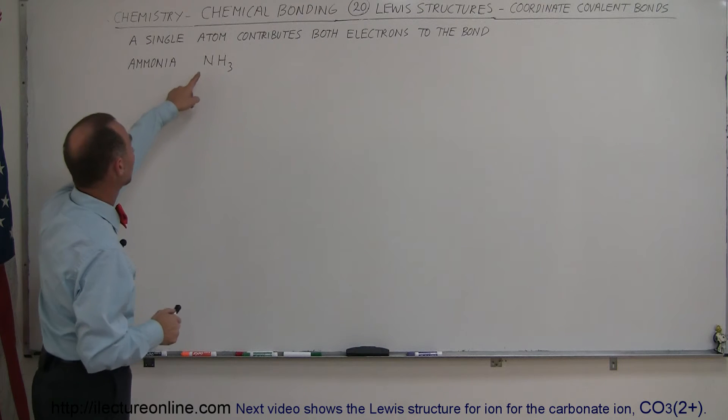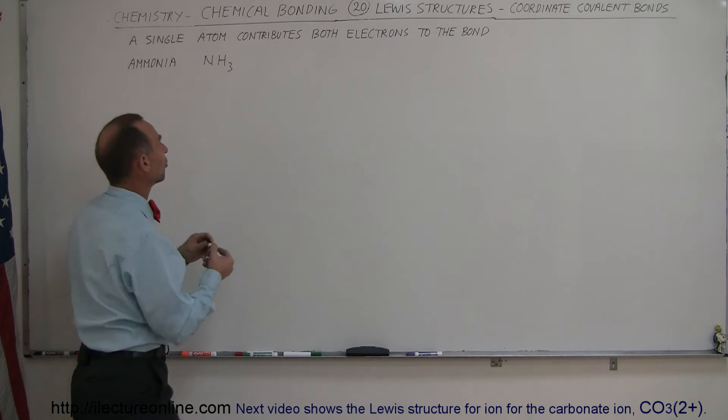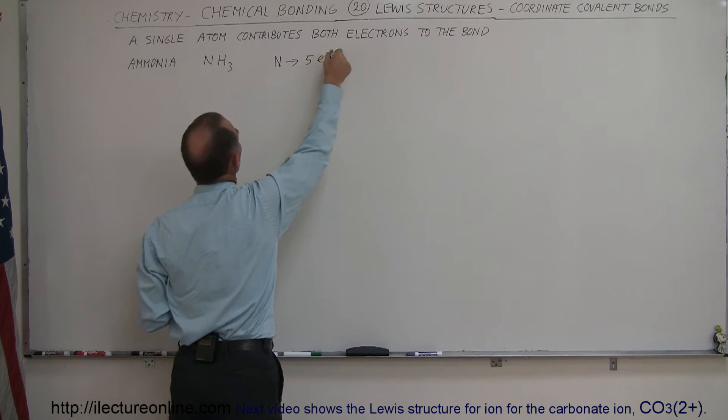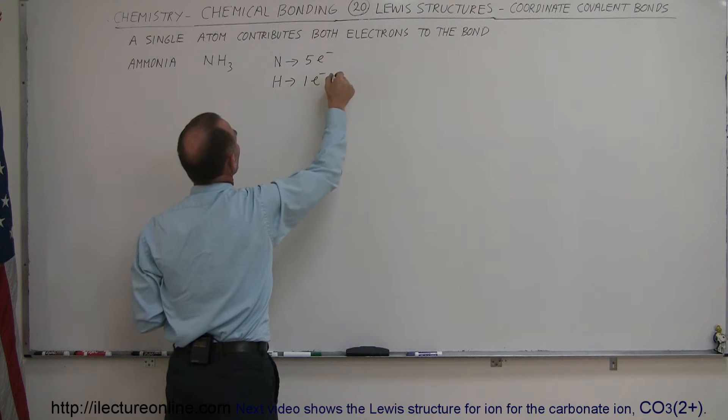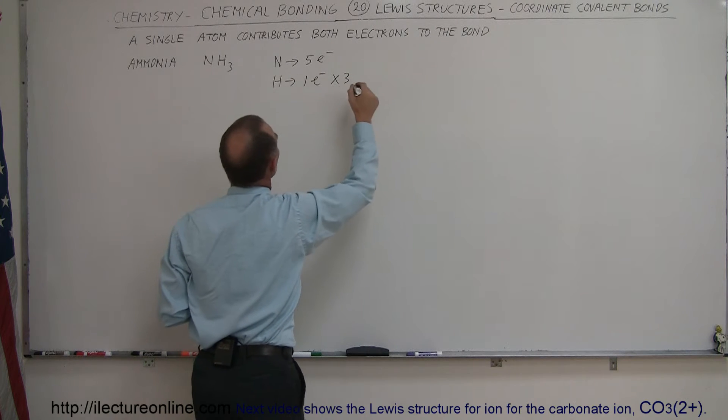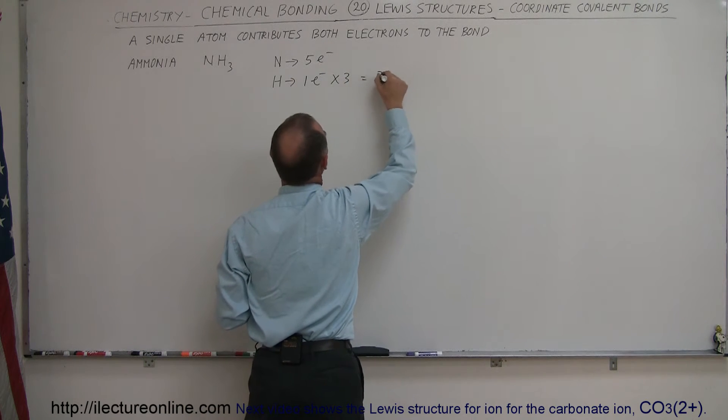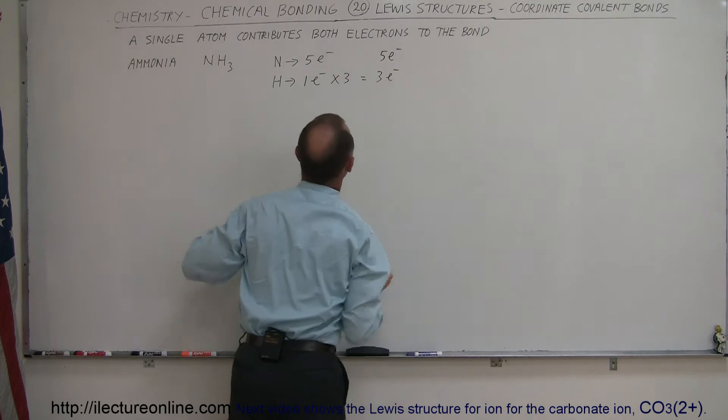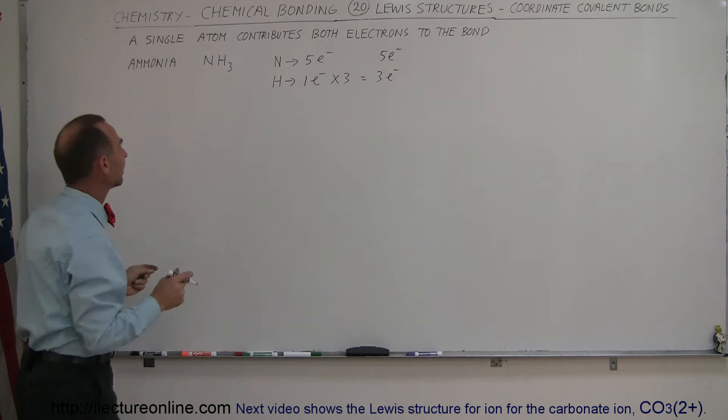So ammonia has nitrogen and three hydrogens. Now remember that nitrogen has five valence electrons, and hydrogen has one valence electron. There's three of those in that molecule, so we have a total of three valence electrons from the hydrogens and five valence electrons from the nitrogen.